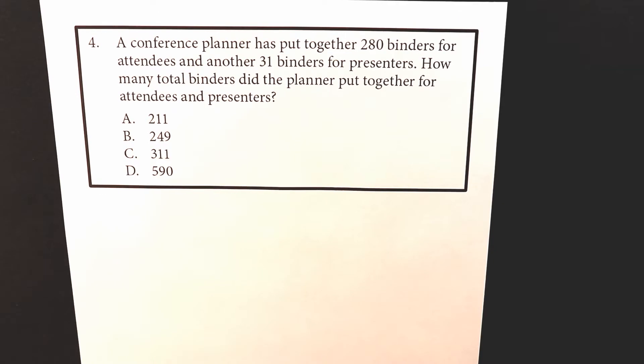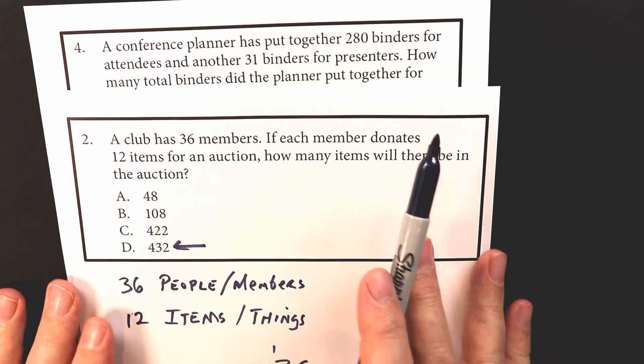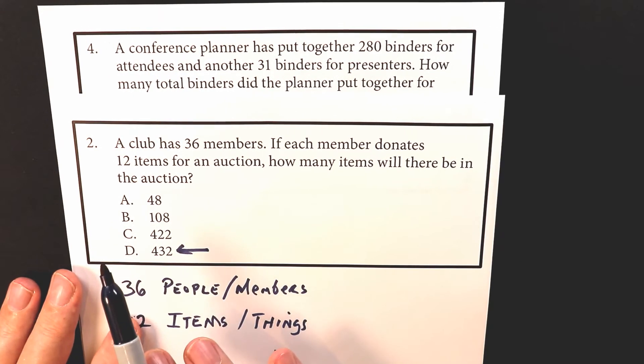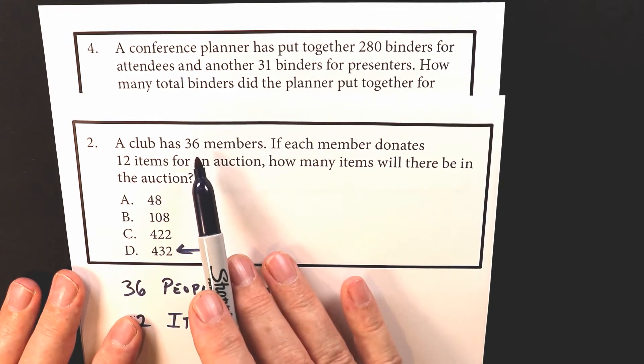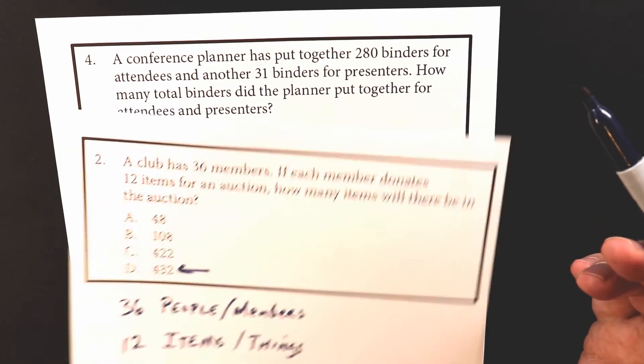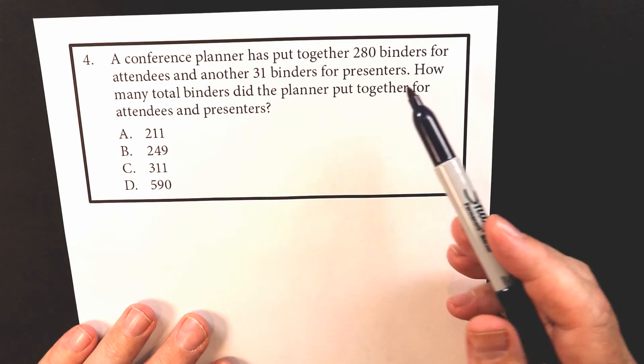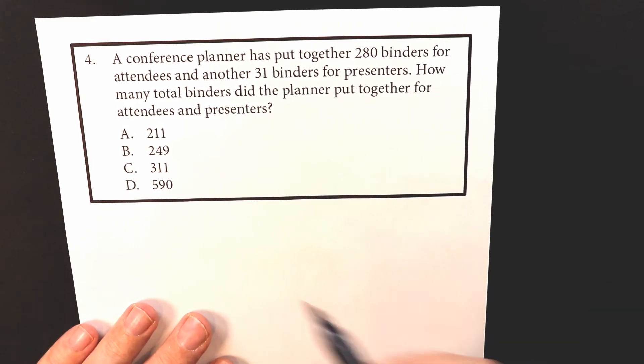Now, one of the things is I want to compare this back to one that we looked at earlier, problem number two, which was a multiplication problem because they're asking you to multiply 36 by 12. They're not asking you how many pages were in these binders. They're just asking you the total number of binders. So for this one, this is an addition problem.